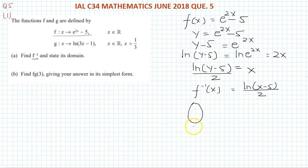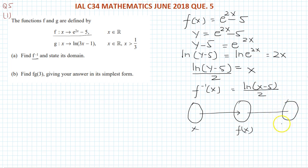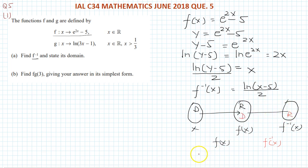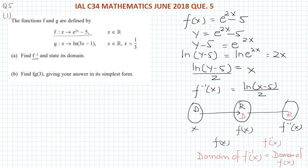For a function f, the x-axis is the domain and f(x) is the range. For f⁻¹(x), the domain and range are swapped. The domain of f⁻¹(x) is equal to the range of f(x). So we need to find the range of f(x).